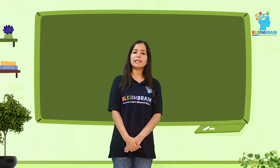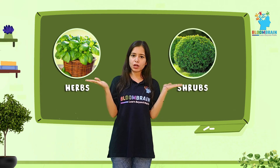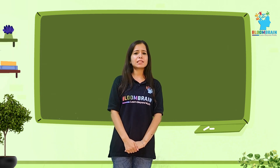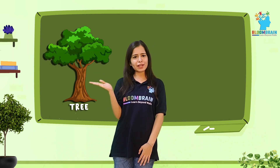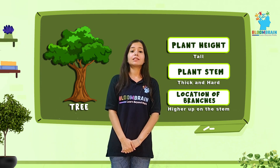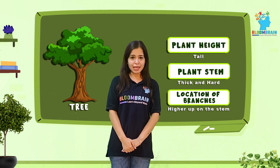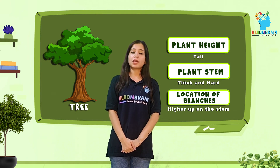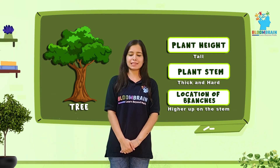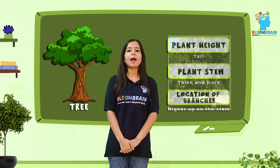So now you will easily be able to differentiate which one is herb and which one is shrub. Can you differentiate the third category? Yes, you can easily — this one is a tree. In the case of trees, the plant height is very tall. The plant stem is thick as well as hard. And the location of branches — the branches are present higher upon the stem. For example, mango tree.